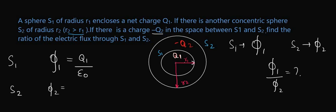Inside S2 we have minus Q2 and plus Q1. So the total charge will be Q1 minus Q2, because the sign of Q2 is negative. So we are adding the total charge, then divided by epsilon 0.